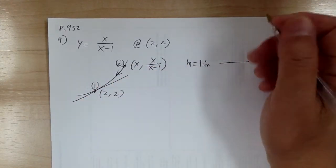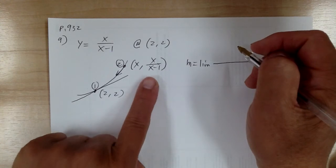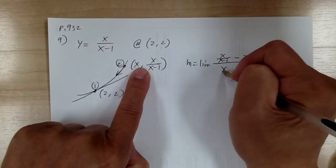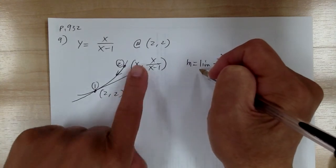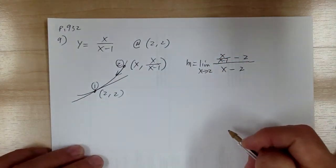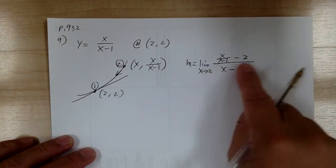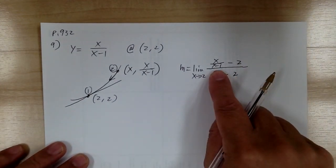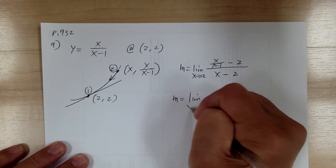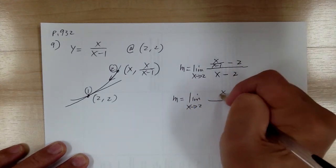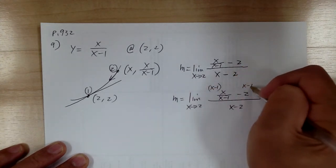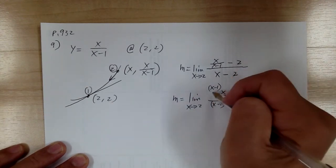So you're going to get y2 minus y1 over x2 minus x1, and x approaches to 2. From here, you have a complex fraction, so you want to multiply everything by the common denominator — x minus 1. Multiply everything by x minus 1.